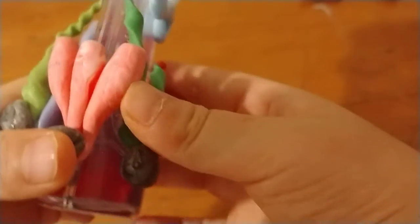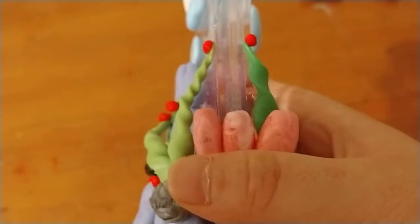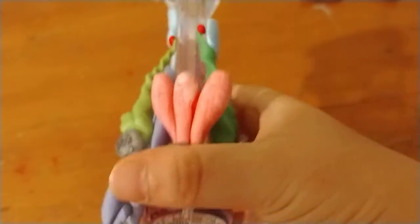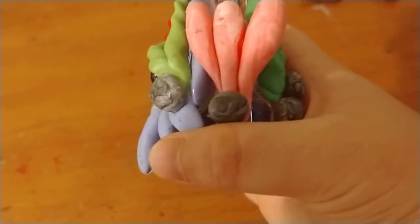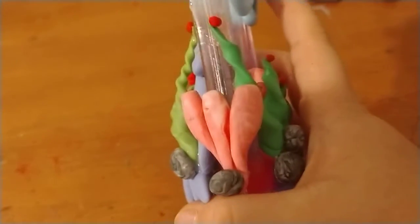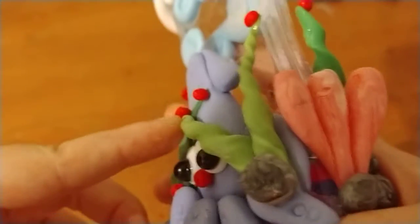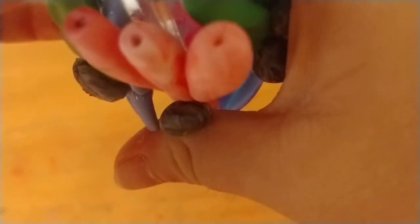These curls, you roll them kind of into a raindrop or something like that, but shorter than the seaweed. Poke a hole on the top just like that.